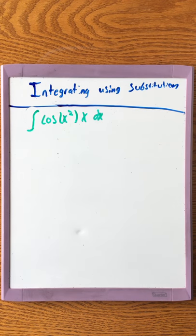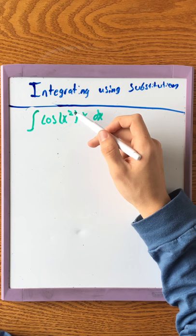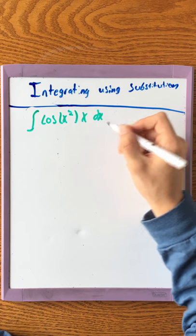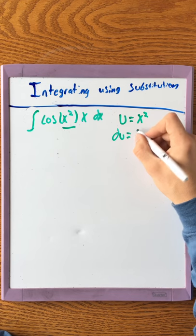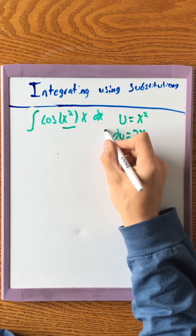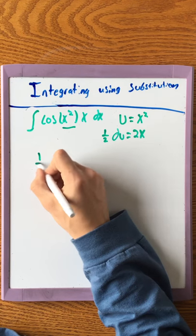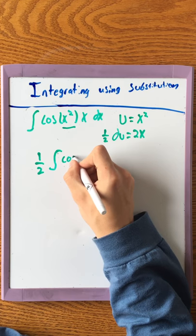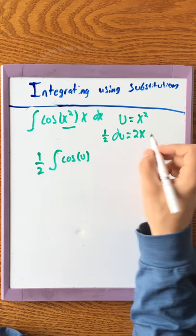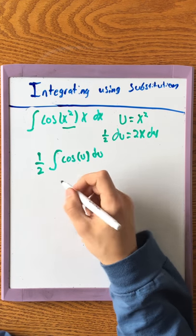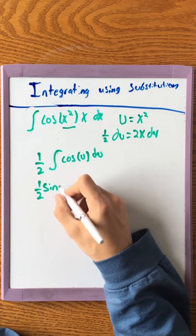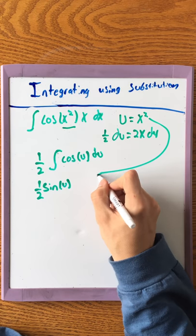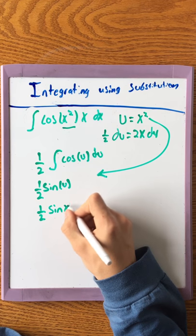Now we'll integrate using substitution. Look for a pattern: the derivative of x² is 2x, which matches the other factor. So let u = x² and du = 2x dx. Since there's no 2x explicitly, we adjust by multiplying by one half, giving (1/2)∫cos(u) du. Integrating cosine gives sine, so the answer is (1/2)sin(x²).